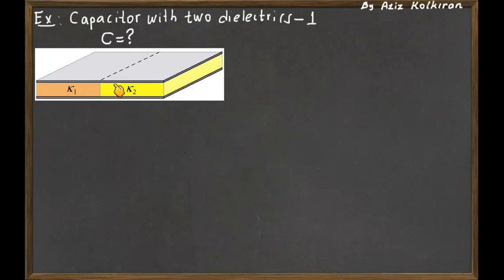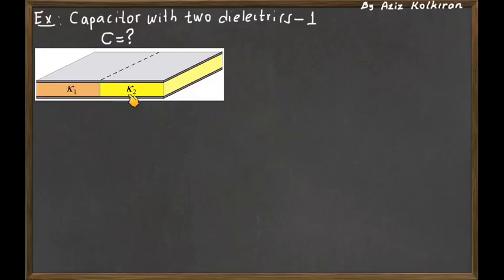Suppose we have a parallel plate capacitor with two different kinds of dielectric materials in between the plates. This time the dielectrics are side by side — not sandwiched between the plates — with half of the region having dielectric constant K1 and the right half having K2.